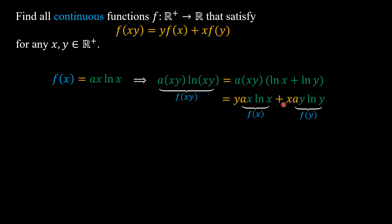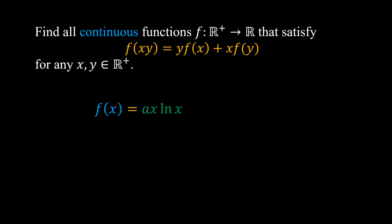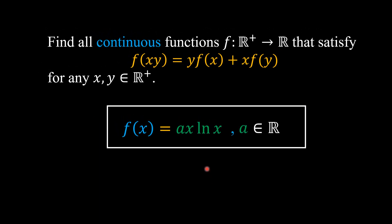And of course, this function satisfies the functional equation on the problem for any real number a. So all the solutions are f(x) is equal to ax times ln x, where a is any real number. And there, we are done.